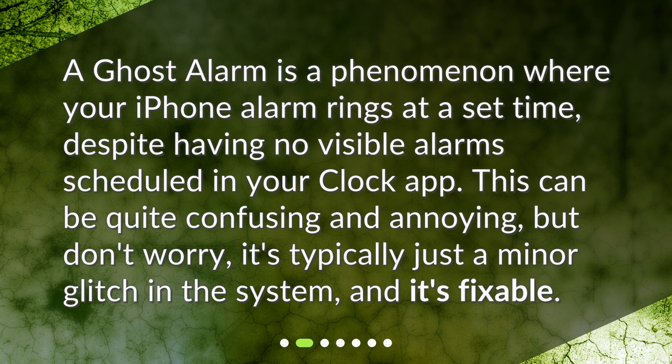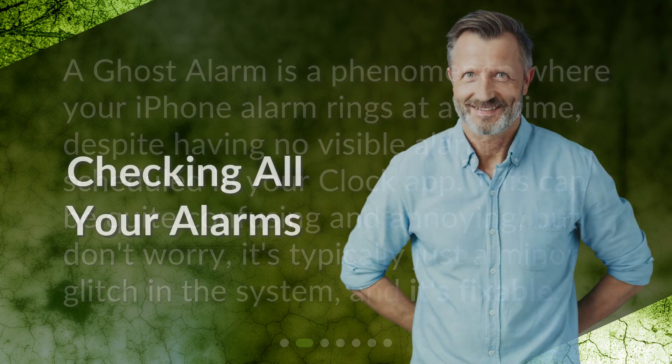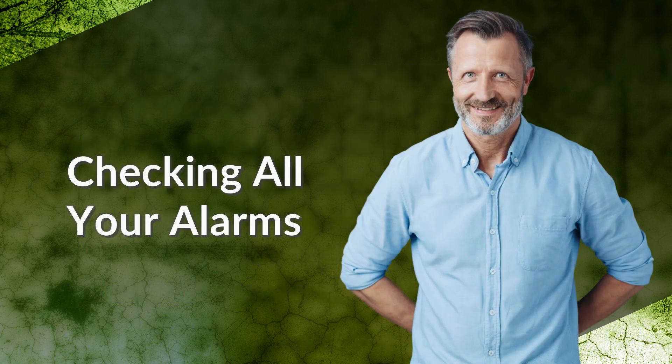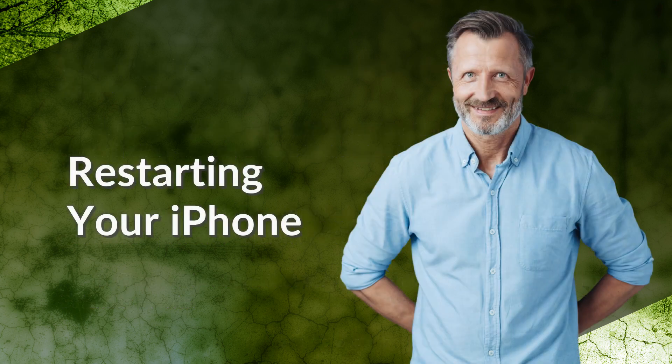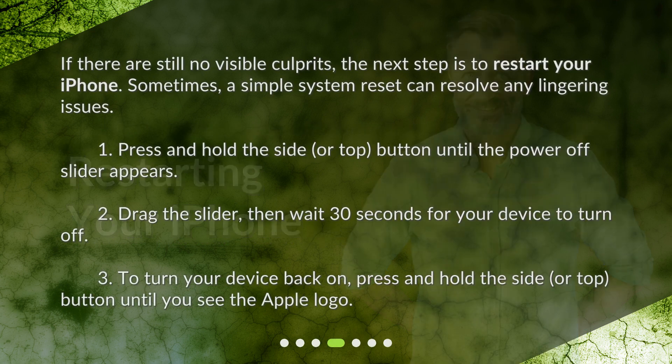This can be quite confusing and annoying, but don't worry — it's typically just a minor glitch in the system and it's fixable. The first step is to ensure you've checked all possible sources of alarms on your iPhone. Go to the Clock app and tap on the Alarm tab at the bottom. Check if there are any alarms that match the time your ghost alarm rings. Also check your Bedtime or Wake Up alarms in the Health app if you're using a newer version of iOS, and check other apps that may set off alarms like Reminders or Calendar events.